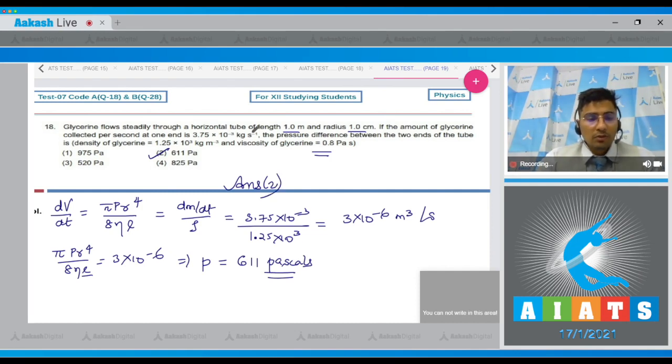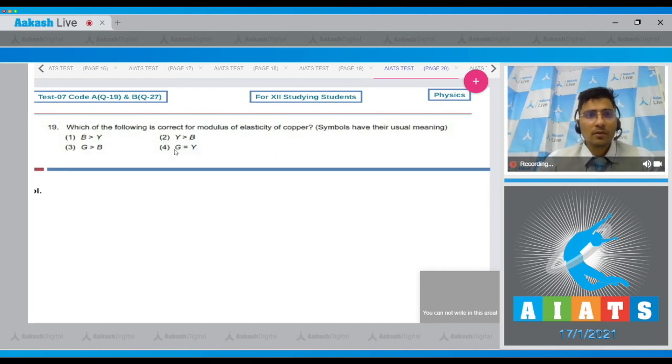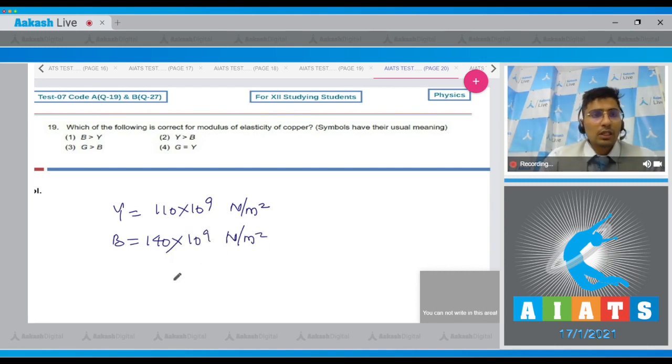Now let us proceed to question number 19. In question 19 which of the following is correct for the modulus of elasticity of copper? This is a factual based question. The Young's modulus for copper is 110 x 10^9 newton per meter square while the bulk modulus is 114 x 10^9 newton per meter square. We can clearly see that the bulk modulus is greater than the Young's modulus and hence for this question the correct answer is option number 1.